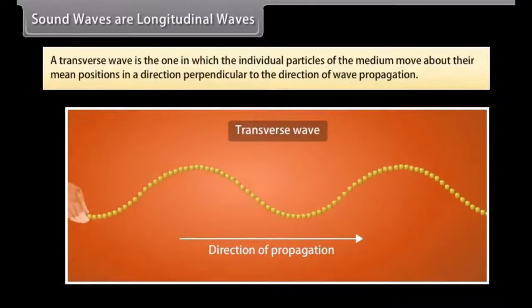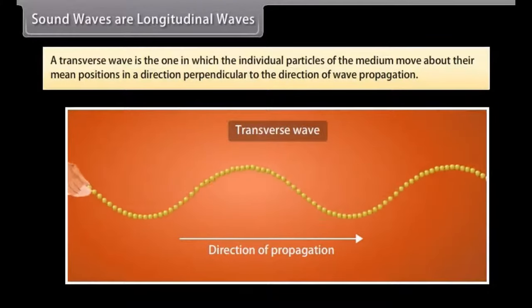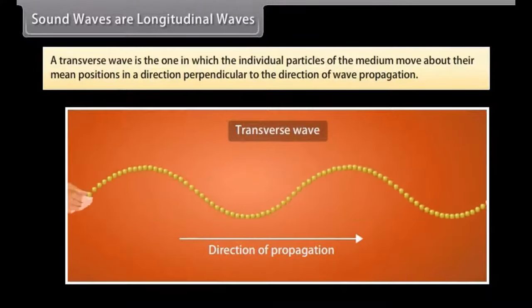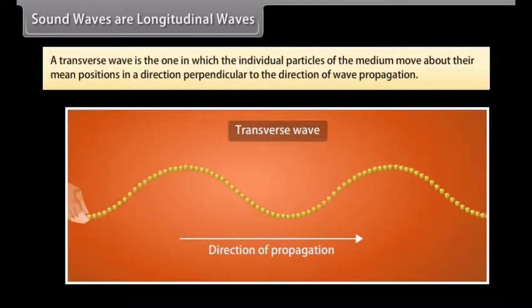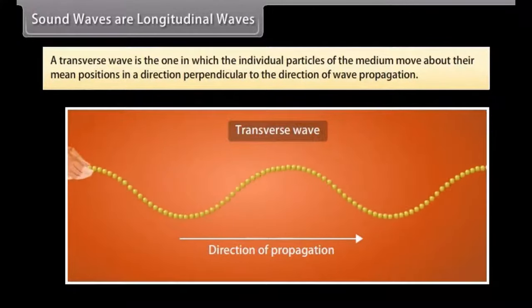There is also another type of wave called a transverse wave. A transverse wave is the one in which the individual particles of the medium move about their mean positions in a direction perpendicular to the direction of wave propagation.